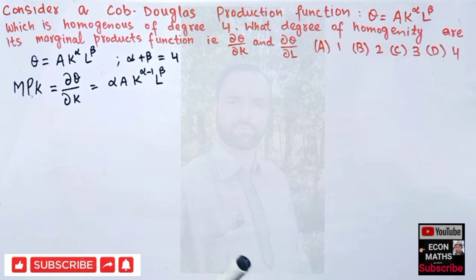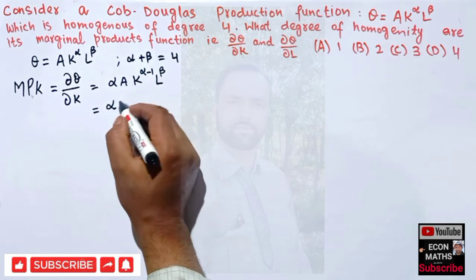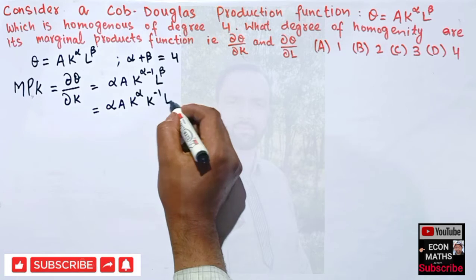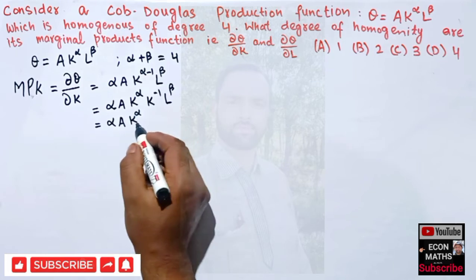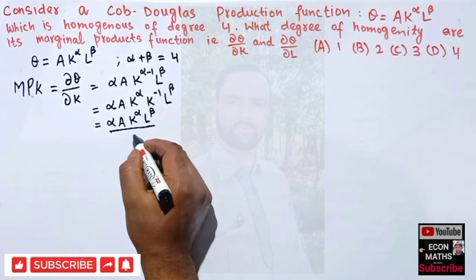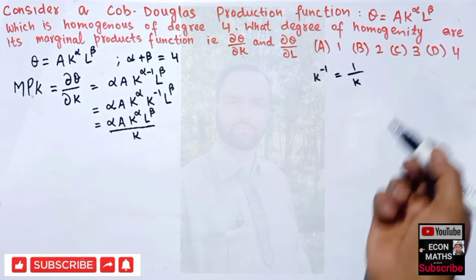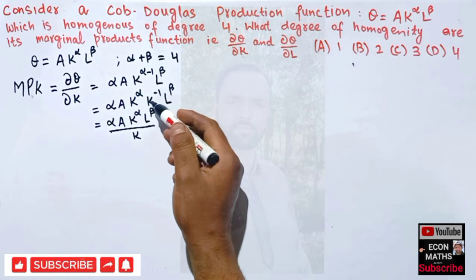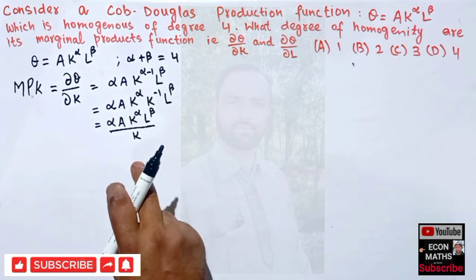We can rewrite this as alpha · a · K^α · K^(−1) · L^β, which simplifies to alpha · a · K^α · L^β divided by K, since K^(−1) simply becomes K in the denominator. This follows from the law of exponents.